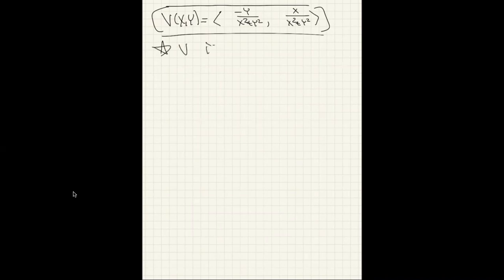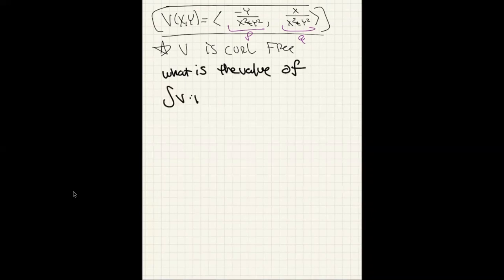Note that in both of the components p and q we have a denominator which is zero at the origin. x squared plus y squared is zero when x and y are zero and zero. So I'd like to explore the idea of what is the value of the work integral over a closed curve c, where c is going to be traversed counterclockwise.